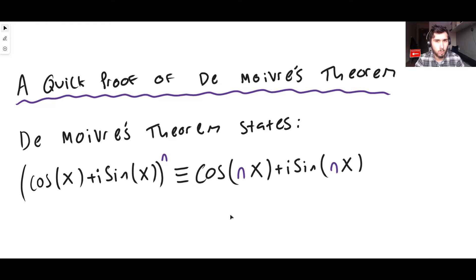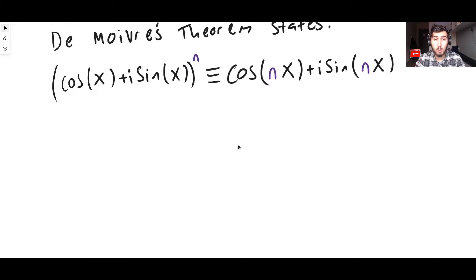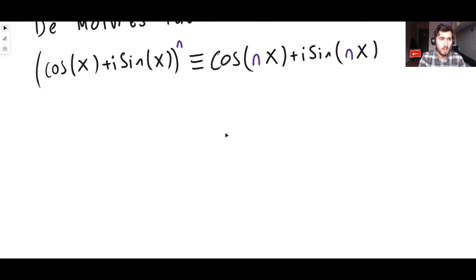We just need one other formula, and that's going to be Euler's formula. So what we'll do is we'll put that down, and we'll begin to derive De Moivre's theorem. Again, this is not going to be a thorough derivation of De Moivre's theorem. We'll save that for another video. But this is a quick one.